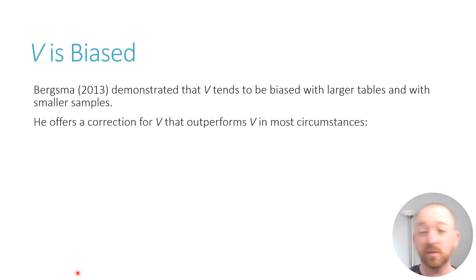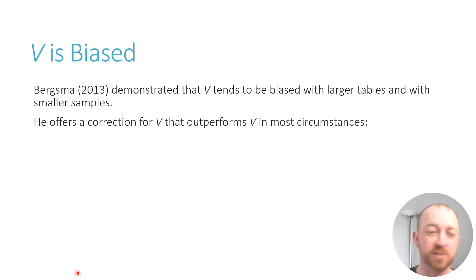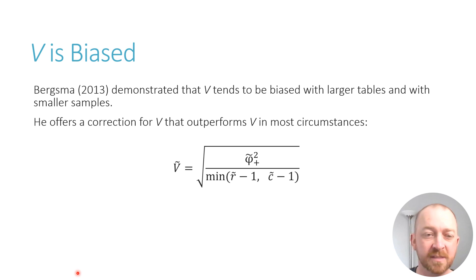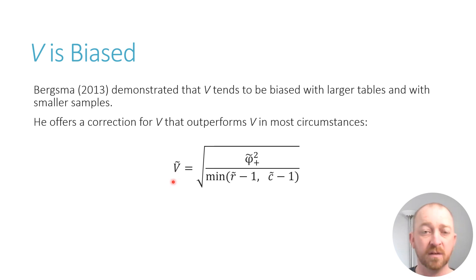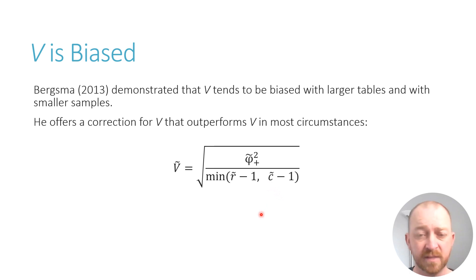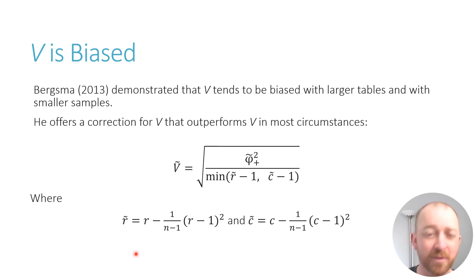Luckily Bergsma not only demonstrates that Cramér's V is biased in these circumstances but he offers a correction — and this is not my correction either, this is Bergsma's. I will give you a simplified equation and walk you through a much simpler example, because this is a lot to handle especially if you're relatively new to statistics. The correction for V is symbolized as a capital V with a little squiggle line above it to indicate that it is the corrected one.